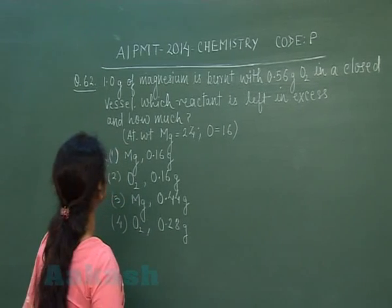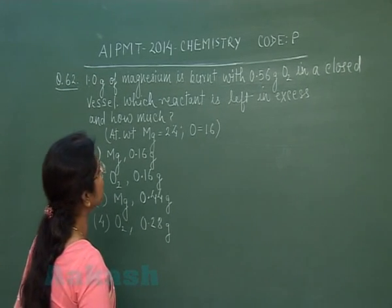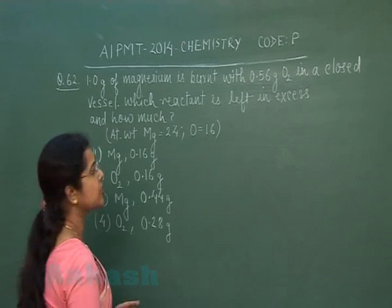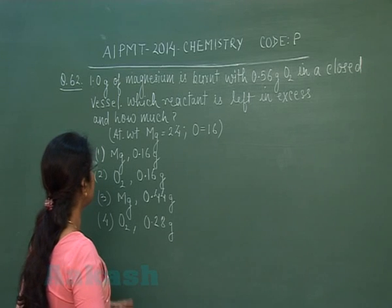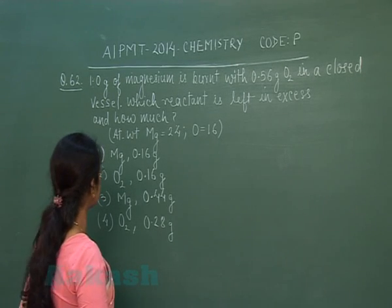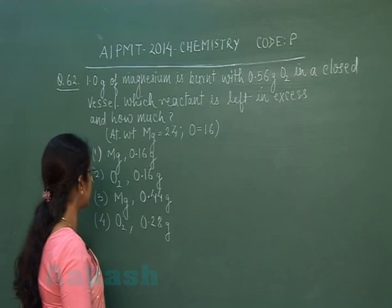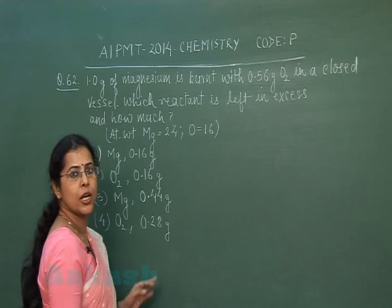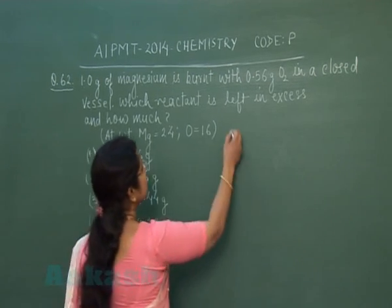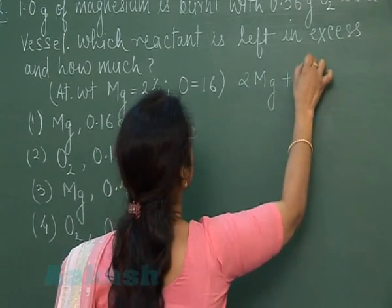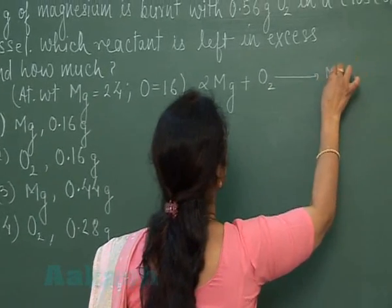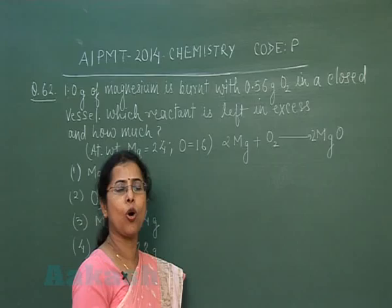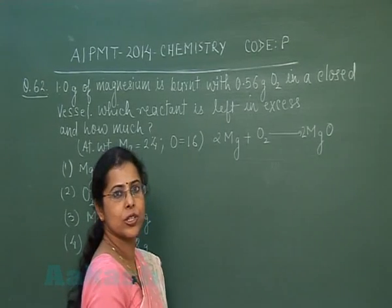Our next question is question number 62. One gram of magnesium is burnt with 0.56 gram of oxygen in a closed vessel. Which reactant is left in excess and how much? The options are: (1) magnesium, 0.16 g; (2) oxygen, 0.16 g; (3) magnesium, 0.44 g; (4) oxygen, 0.28 g. A chemical reaction takes place between magnesium and oxygen forming magnesium oxide. When masses of both reactants are given, we must first identify the limiting reagent.